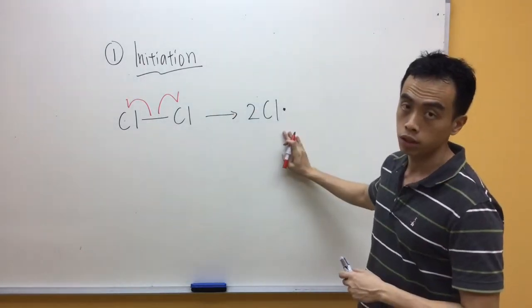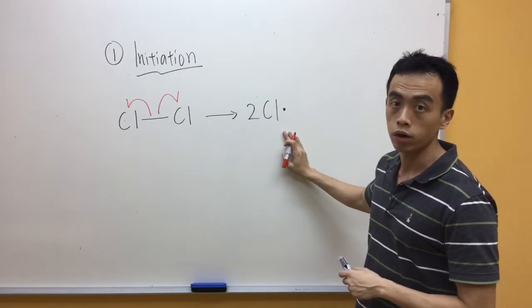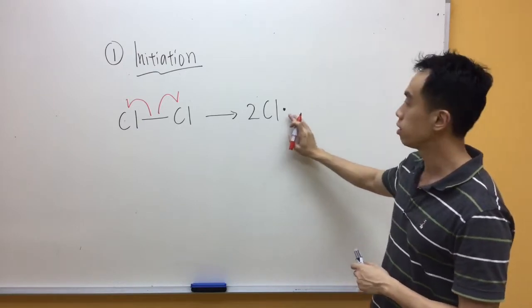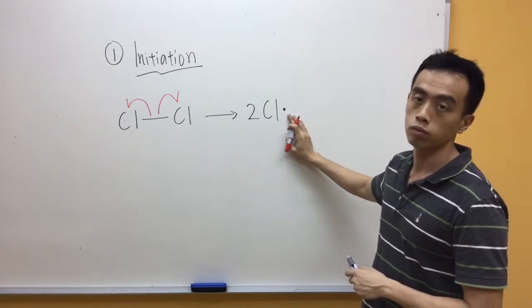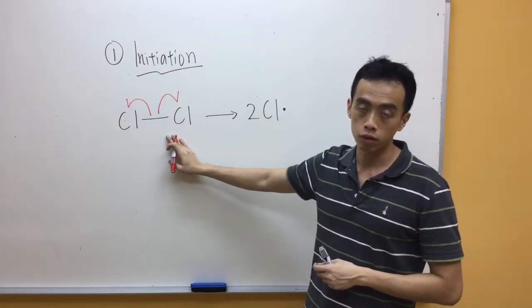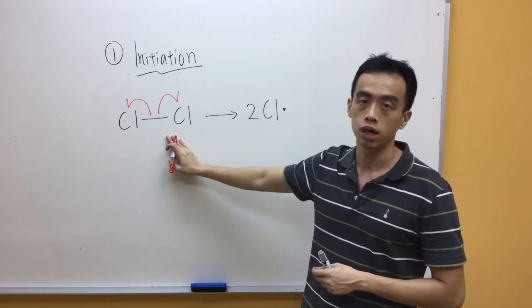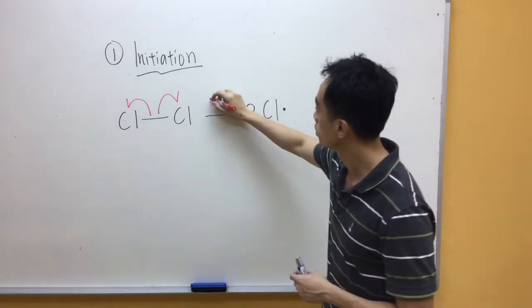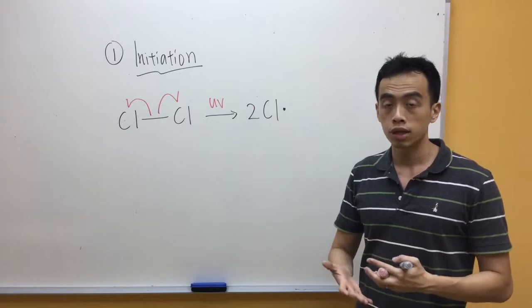So the products form will be two chlorine radicals, which is an odd-electron species, which is represented by a dot next to my chlorine. Usually the energy that is used to break the Cl-Cl bond will come from our electromagnetic light. So this is the initiation step, which is pretty simple.